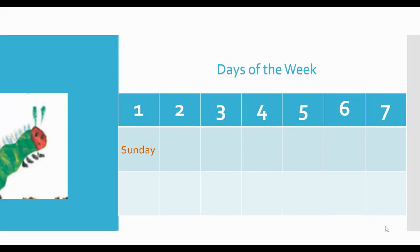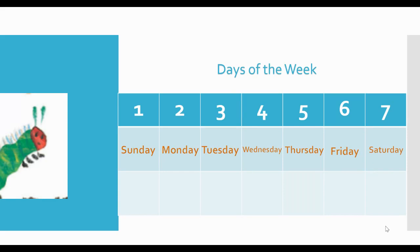What is the second day of the week? Monday. What is the third day of the week? Tuesday. What is the fourth day of the week? Wednesday. What is the fifth day of the week? Thursday. What is the sixth day of the week? Friday. What is the seventh day of the week? Saturday. Those are our seven days of the week, and they are all in order.